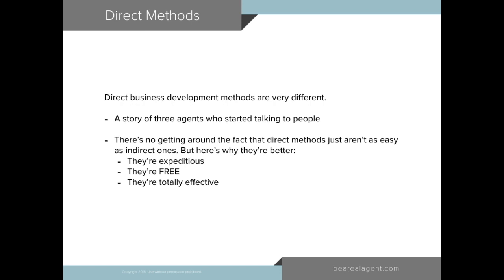And everyone wondered how are these agents — and by the way, they work in three different offices — how are they doing any business? They don't really have a Facebook business page. I don't ever see them combing their database. And what was happening is that each of them just chose a neighborhood they were going to farm, and they started door knocking and getting listings. So why did they get listings?